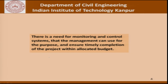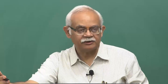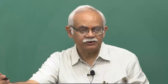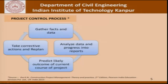If in the middle of the project we find that we are slipping somewhere, we try to look at what additional resources can be deployed and how resources can be diverted from one activity to another to ensure the project is completed in time without exceeding the overall budget. The project control process involves gathering facts and data, analyzing the data into reports, predicting the likely outcome of the current course, taking corrective actions and replanning. Once replanning is done, we go back and find out whether that is working — so we gather facts and data again, and this cycle continues.